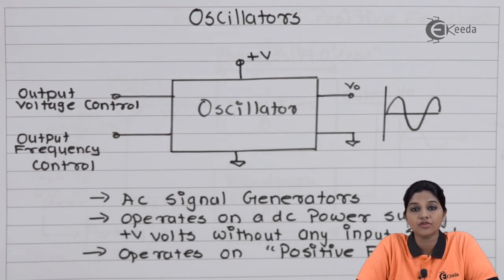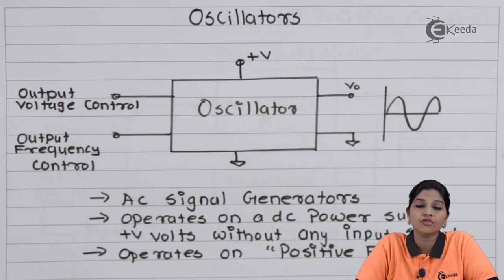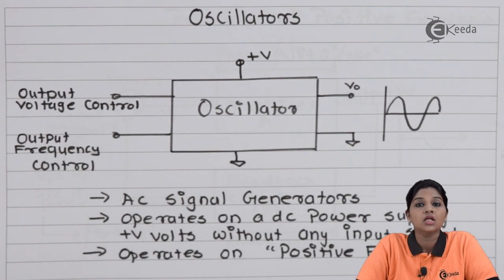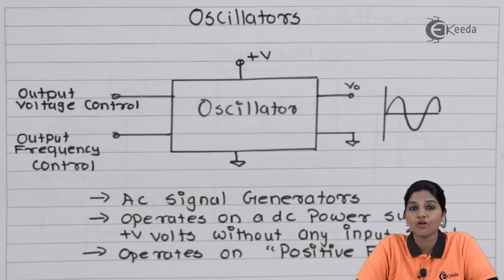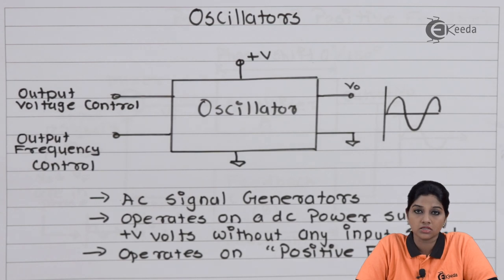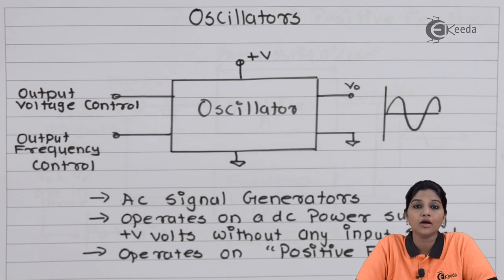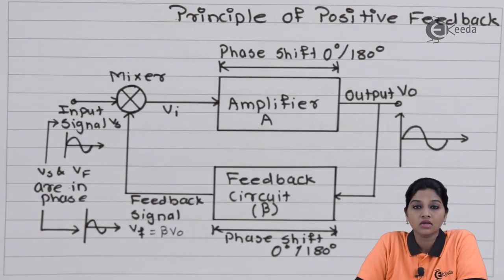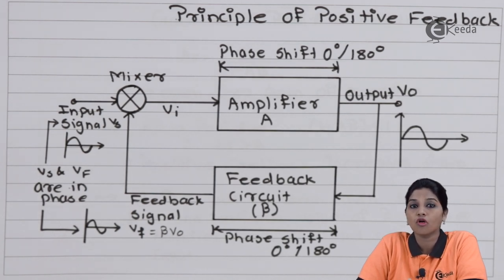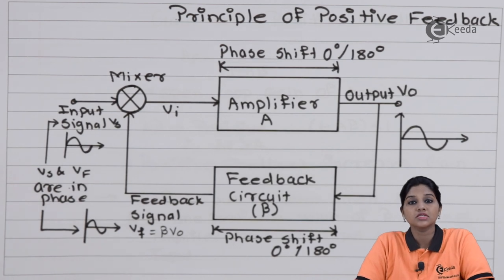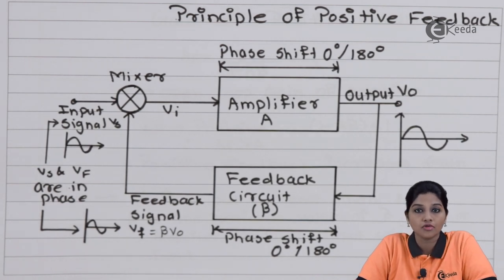In negative feedback, the output and input are out of phase and therefore it is called degenerative feedback. Negative feedback has a number of advantages over positive feedback. But when we are talking about oscillations, we require positive feedback in the circuit. Now let's understand the concept of positive feedback using a block diagram, which is also the block diagram of an oscillator. Basically, an oscillator is an amplifier with positive feedback.